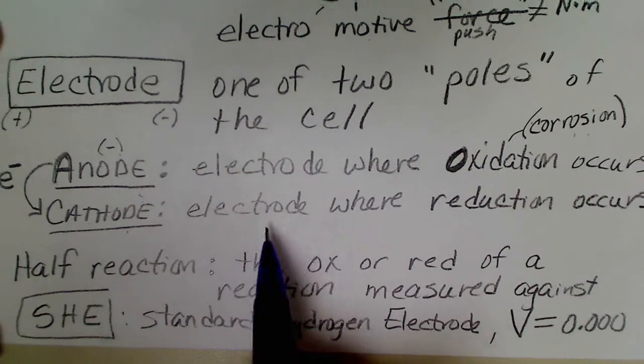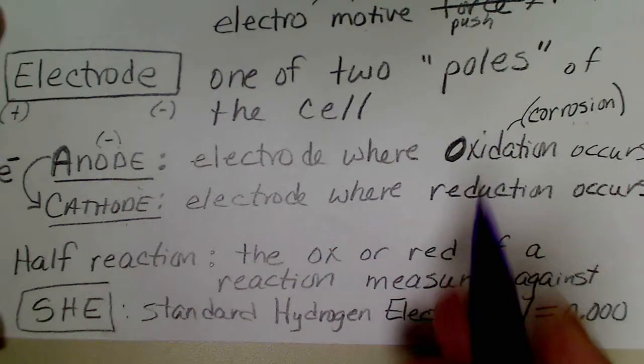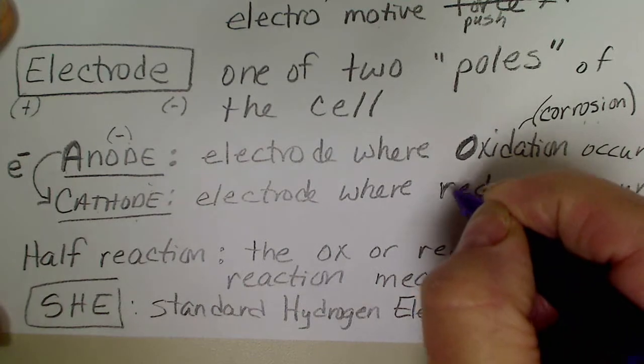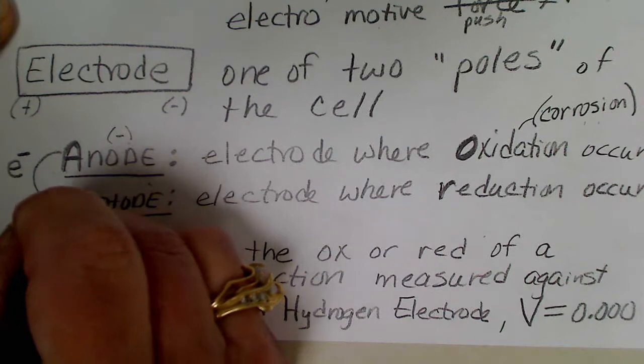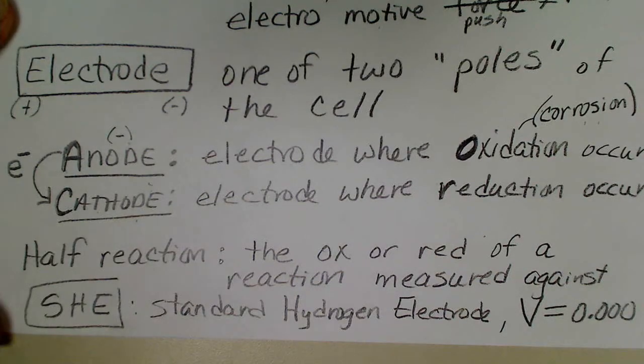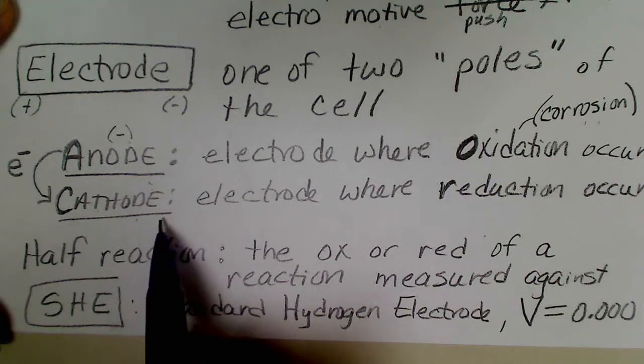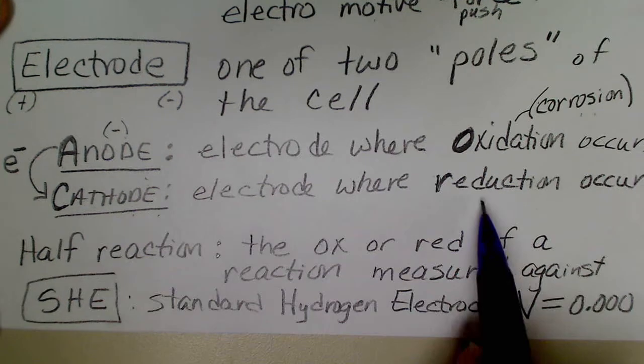The cathode is the electrode where reduction occurs. Again, just from the alphabet you can say, well, reduction is a consonant, cathode is also a consonant, and so the cathode will be the metal that is more easily reduced.